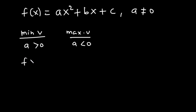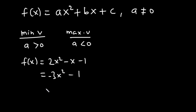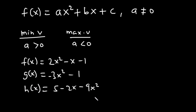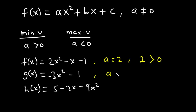Let's look at some examples: f(x) = 2x² - x - 1, g(x) = -3x² - 1, and h(x) = 5 - 2x - 9x². f(x) has a minimum value because a equals 2, which is greater than zero. g(x) has a maximum value because a equals -3, which is less than zero. Similarly, h(x) has a maximum value because a equals -9, which is less than zero.